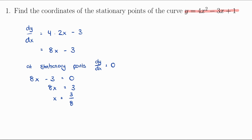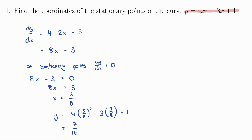We also need to find the y coordinate of the stationary point. Since all stationary points lie on the curve, we can find it by substituting x = 3/8 into y = 4x² - 3x + 1. So y = 4 × (3/8)² - 3 × (3/8) + 1, which equals 7/16. Therefore the stationary point of the curve y = 4x² - 3x + 1 is (3/8, 7/16).